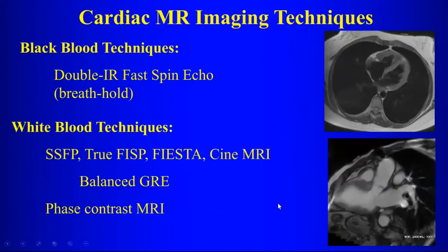Starting with the basic imaging techniques, there are two basic types. There's black blood imaging, and the pulse sequence used for that is called double inversion recovery fast spin echo. It's a breath hold technique, and it gives you an image where the blood flow is black, giving you a nice view of the anatomy.